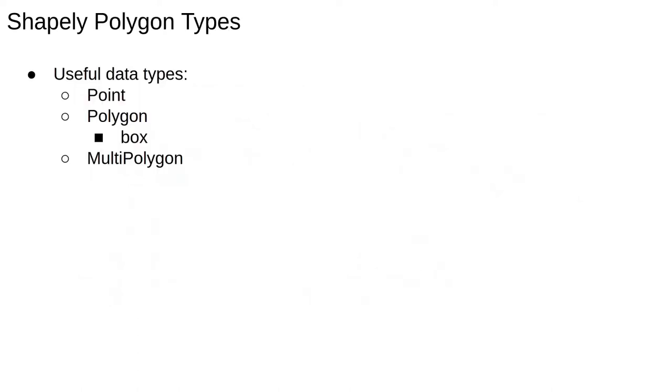Shapely has some very useful data types. The most commonly used ones for data analysis are points, which are zero area points which represent something like a GPS reading. A Shapely polygon is probably the most useful data type and allows us to store and manipulate polygons. A Shapely box is actually a function rather than a type and allows us to create a rectangle, which is probably the most common shape we'll need. And finally, a multi-polygon is simply a container of multiple polygon objects.